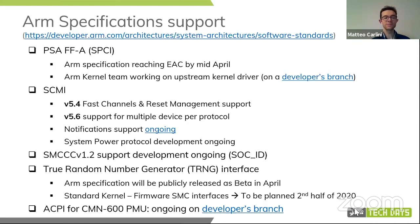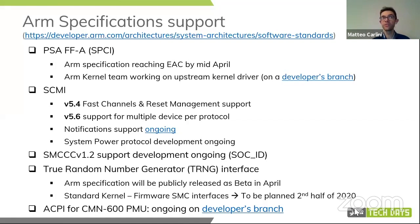Next is the SMC calling convention 1.2. There is a new specific SMC explicitly requested by partners, which is the SoC ID — that will be implemented very soon together with the publication of the spec. ARM is also producing a spec around the TRNG, which has been requested by the ecosystem. The spec will be released in beta beginning of April, and it will define standard kernel and firmware SMC interfaces for RNG support requests and seeds for RNG generators. Support in kernel and firmware is still TBD because the spec is still in beta, and the plan is to address those features in kernel and firmware somewhere in the second half of 2020.